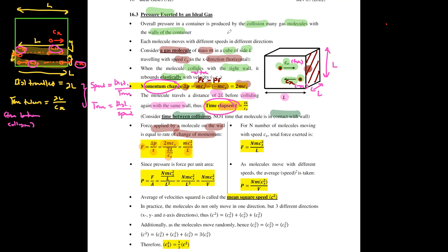The force applied by one molecule on the wall equals the rate of change of momentum, which you learned in AS Physics: momentum change divided by time between collisions gives mCx squared over L. This is for one molecule. To make it closer to real life, consider N molecules, giving a total force of NmCx squared over L.